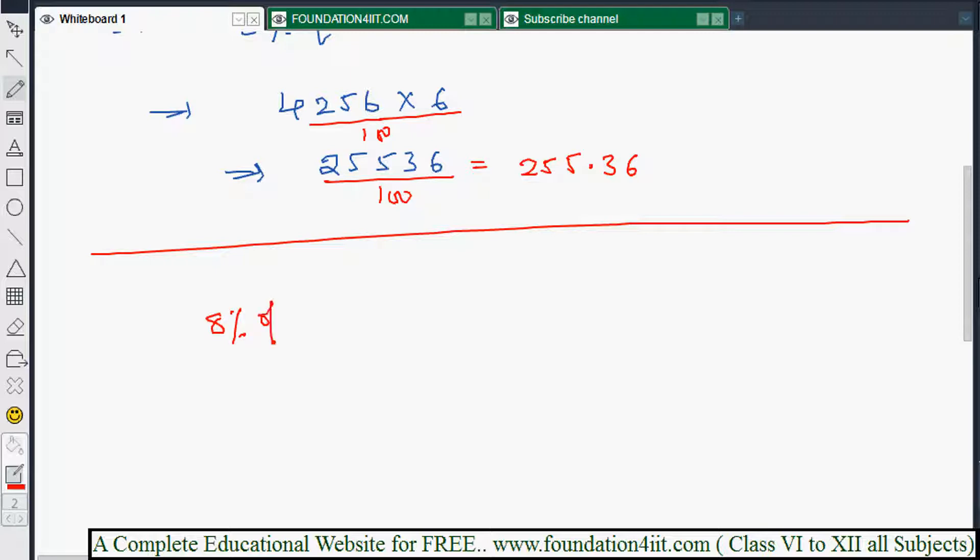So what we'll do is just take 4562 and multiply by 8 first. If you multiply, 36,496 will come. First you multiply that, then...